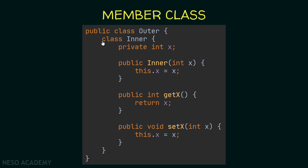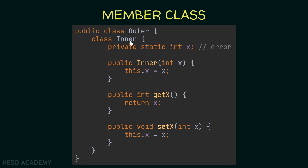Now, if we try to make the variable x a static variable inside the member class, this will give us an error. Member classes cannot contain static variables because Java associates the inner class with an object of the outer class. Since the inner class is related to an object of the outer class, it cannot have its own static variables — static variables are class variables, not instance variables.